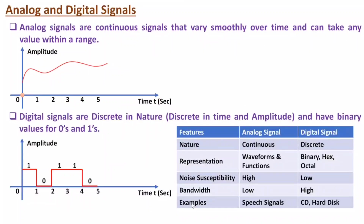For example, analog signals can be a speech signal, while digital signals are what we store inside a CD, hard disk, etc. So this is how one can compare analog and digital signals.